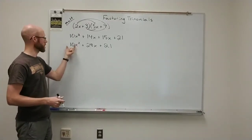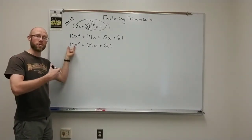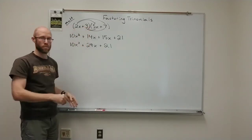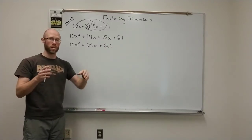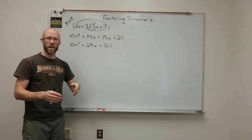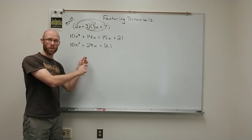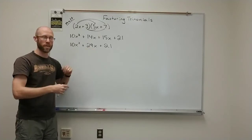The guess and check method is just that you pick the factors of the lead coefficient, which are 1 and 10 or 2 and 5, and you put them in the parentheses, and you take the factors of 21, which are 1, 21, 3, and 7, and you put one of those combinations in the parentheses, multiply it out and see if it works. If it doesn't work, you try a different combination until you get it to work out.